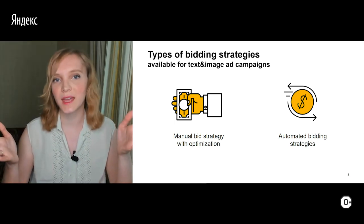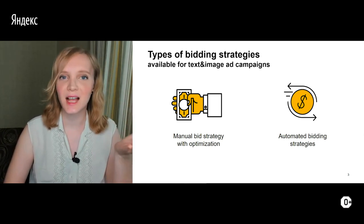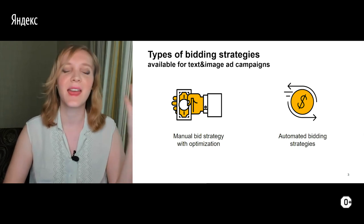The first category is manual bidding strategy, where you set the bid amount at the targeting level yourself, analyze the data, control the bidding process, and change bids every time. Or you can use automated bidding strategies — also called smart bidding strategies — where the system helps raise or decrease bids according to the probability of a potential customer converting, for example.